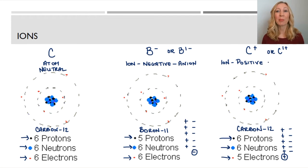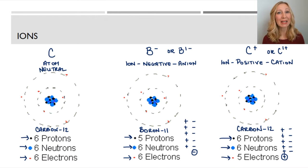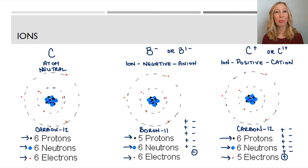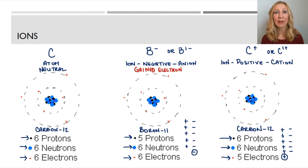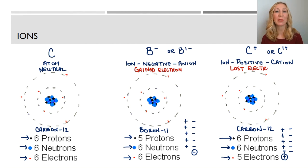This is an ion, and a positively charged ion has a special name: a cation. Anytime you see the word cation, think positively charged ion. So we have a neutral atom, a negative ion or anion, and a positively charged ion or cation. Anytime you see a negatively charged ion, it gained electrons — something negative. Anytime you see a positively charged ion, it lost electrons — it lost something negative.